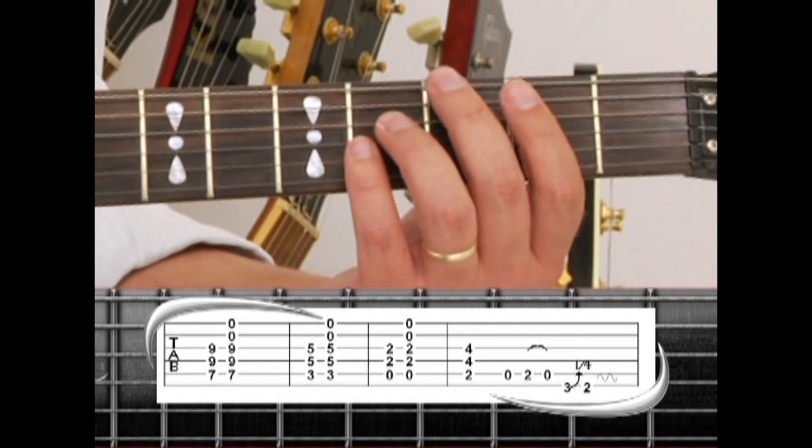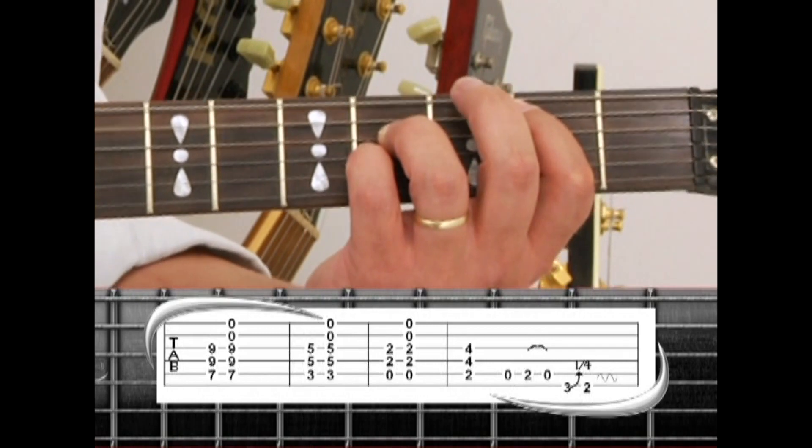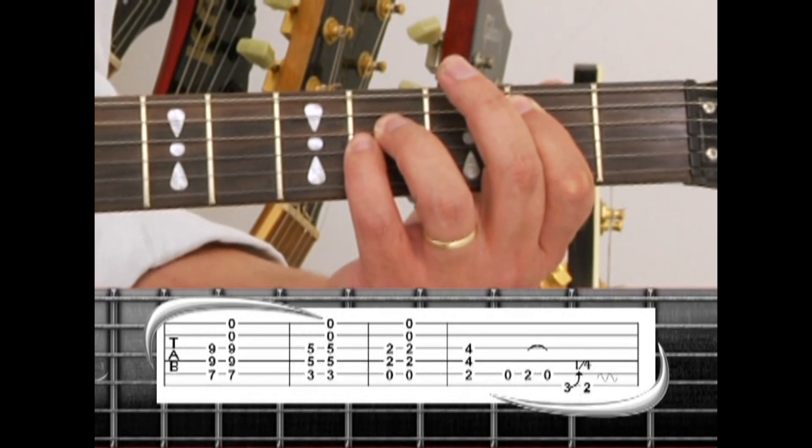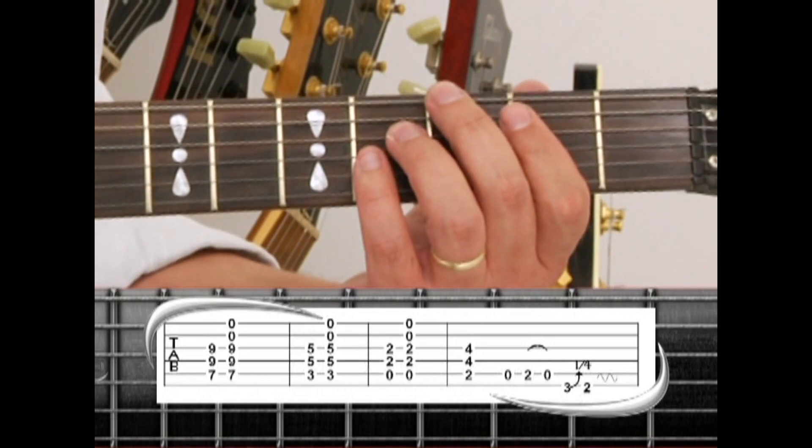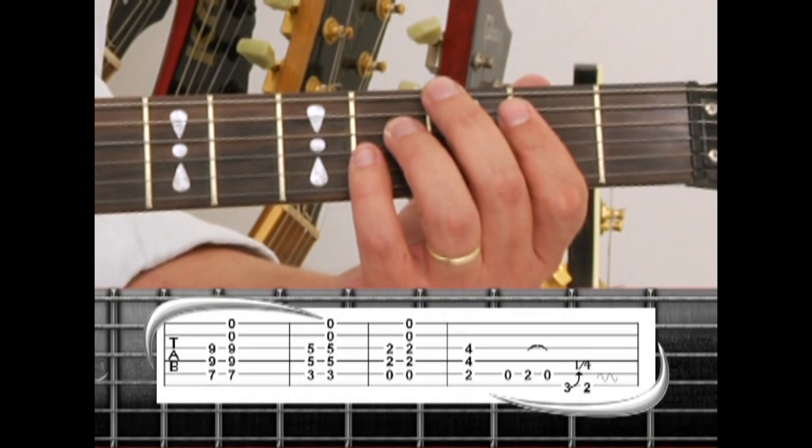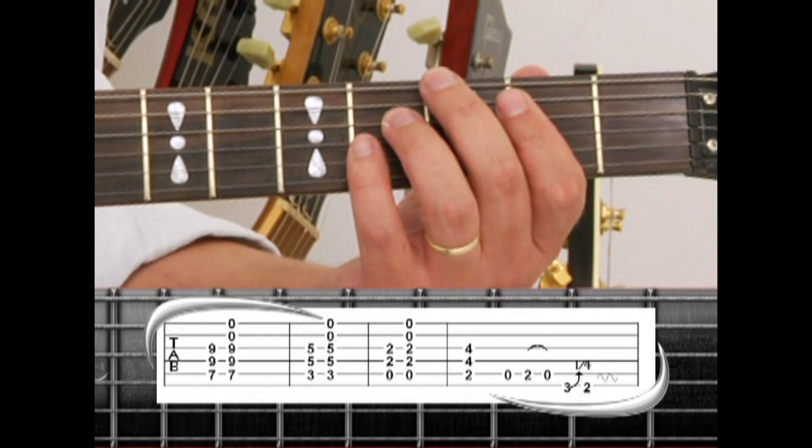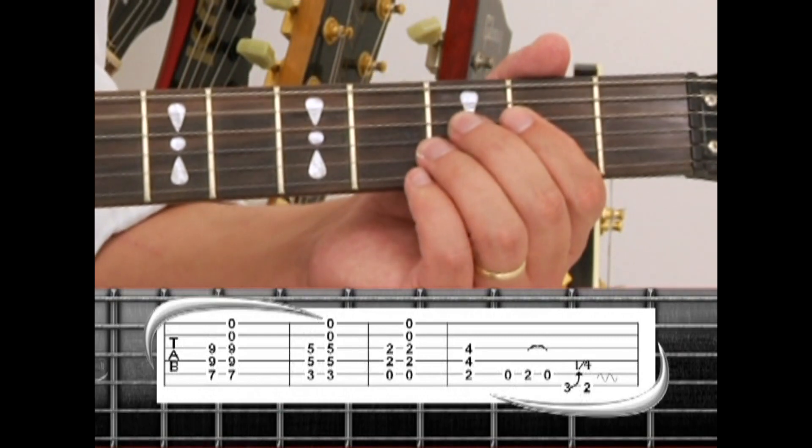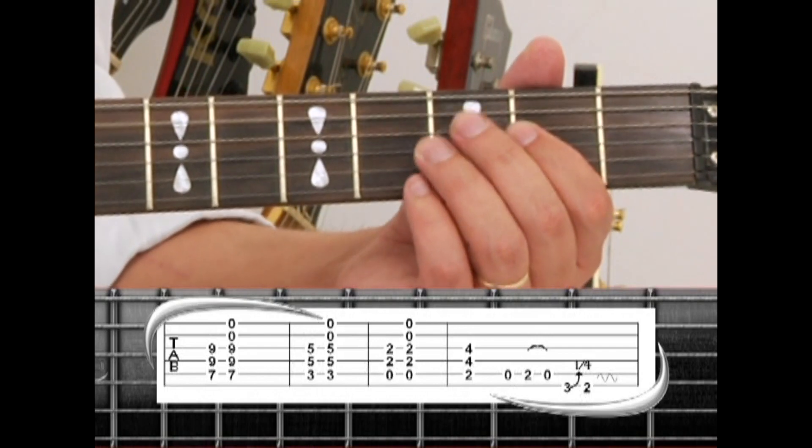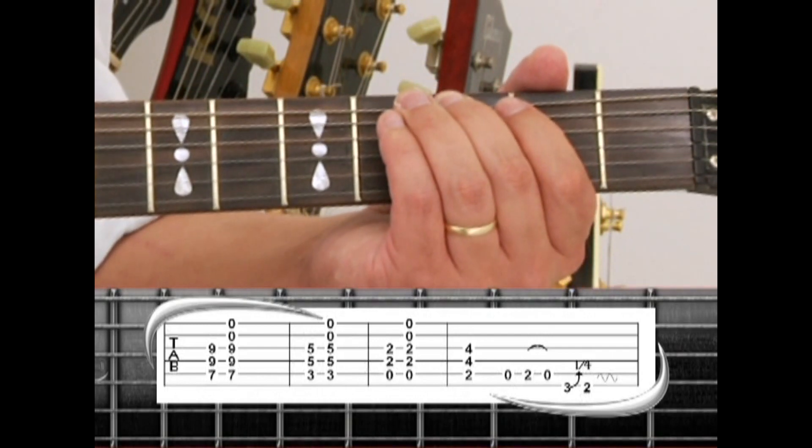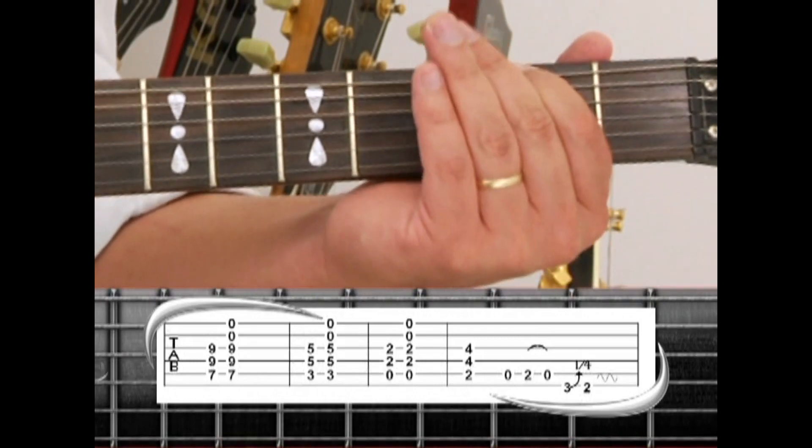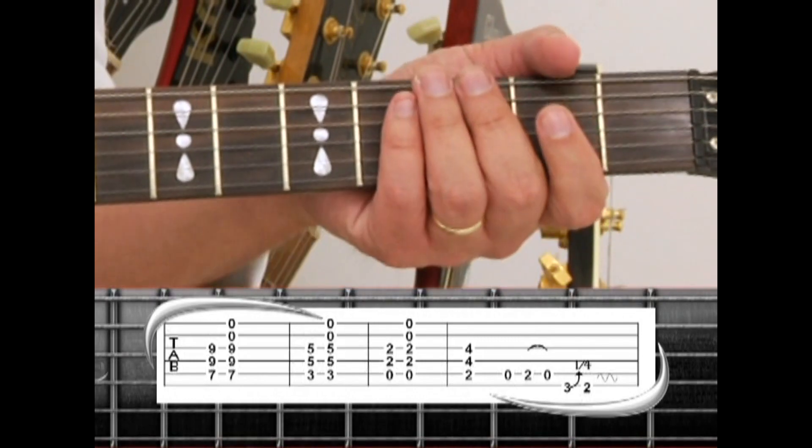Then we move back up to a fretted B5. 5th string 2nd fret, 4th and 3rd string 4th fret. The B5 is not played with open strings. Instead, we add an end tag playing the 5th string open, 2nd string pull to open, to the 6th string 3rd fret with a slight bend, then 2nd fret with vibrato. Here's a practice run of the chord structure with a slow tempo.